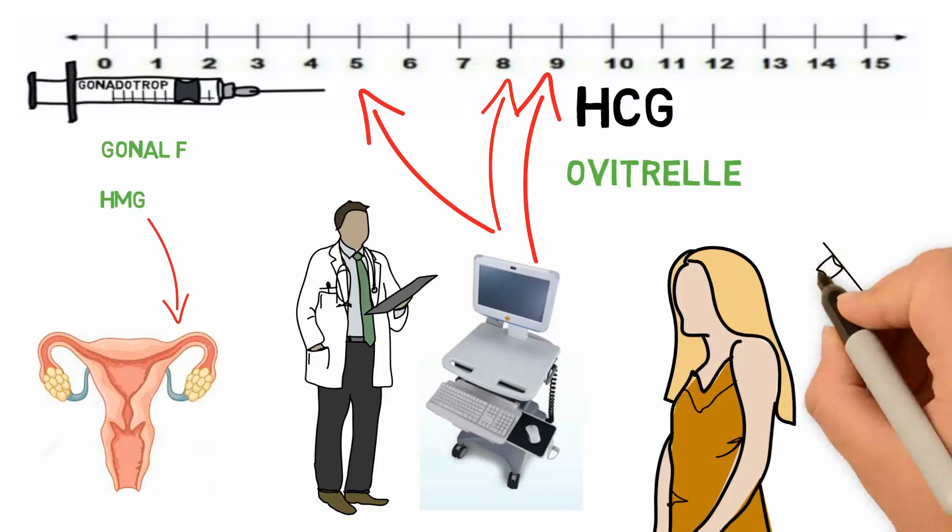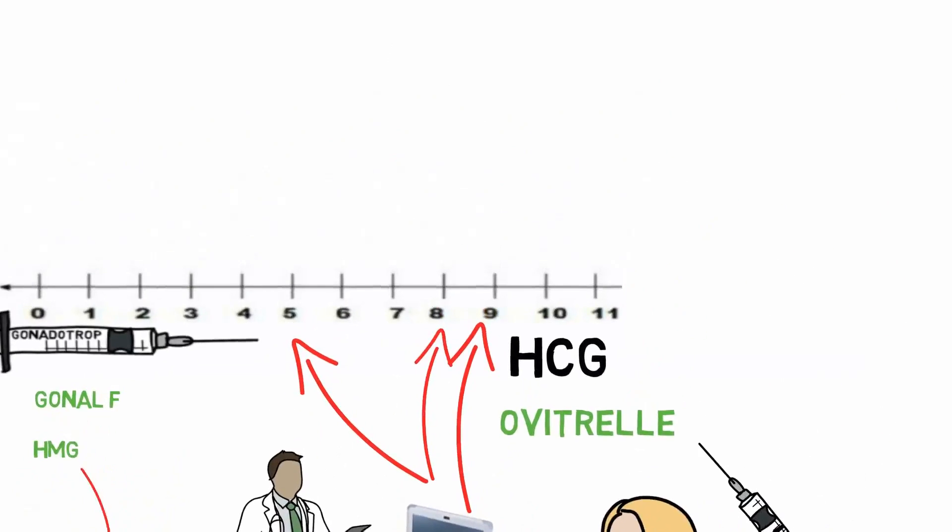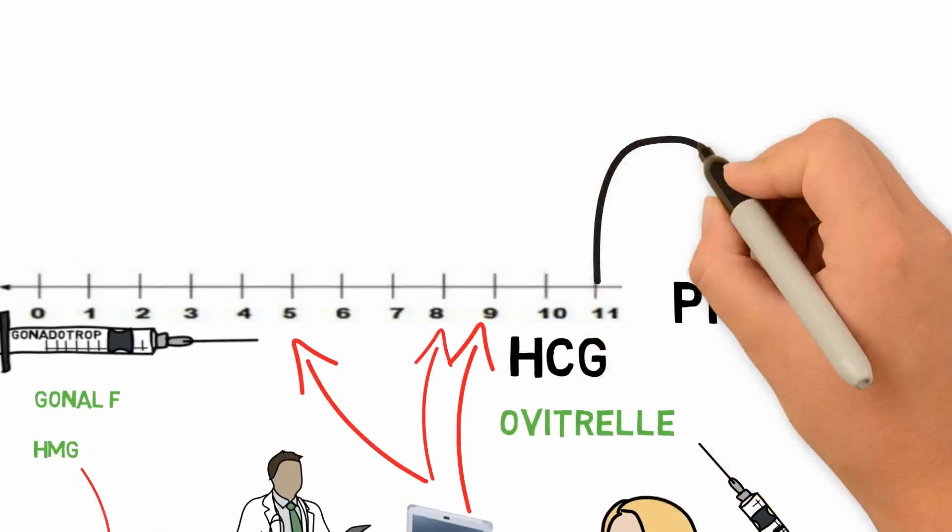When the time comes, we administer the injection of HCG Ovitrelle to provoke the final maturity of all the eggs that have been developed and monitored. This will be synchronized 36 hours beforehand.